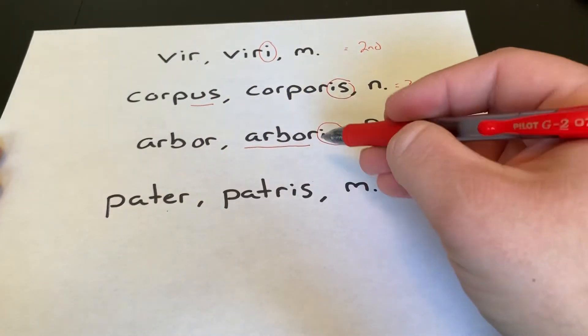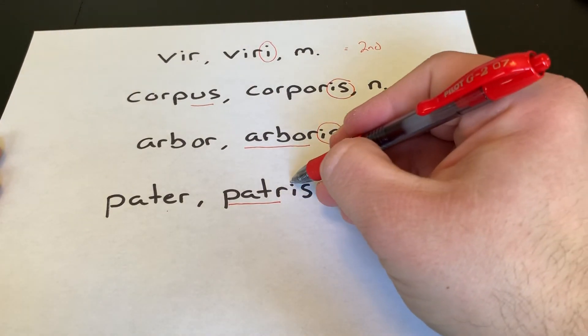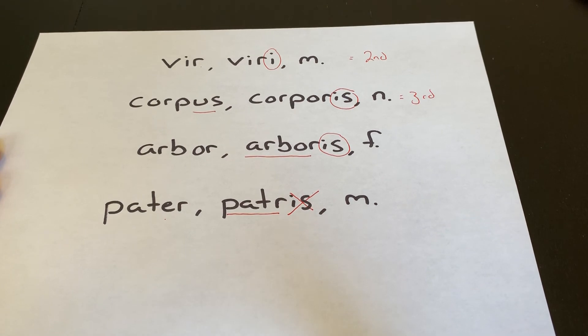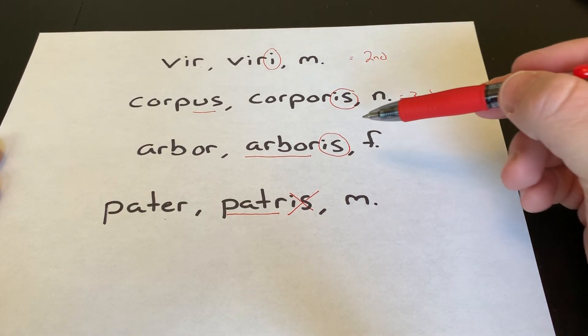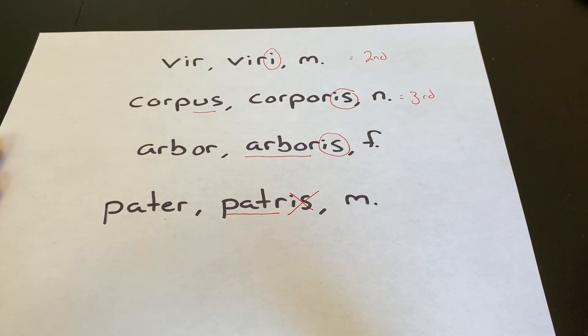So pater, your stem is not pater, your stem is patr. And you're going to know that because you took the genitive form and took off the ending. So these are examples of words where paying attention to the genitive and not just the nominative is really important.